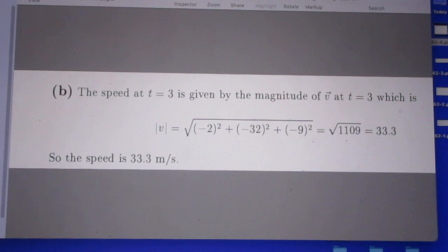Now if you put in t equals 3 and want to know the magnitude, you have to take the square root of the magnitude in the x direction, y direction, and z direction. Simple straightforward math, and you find 33.3 meters per second.